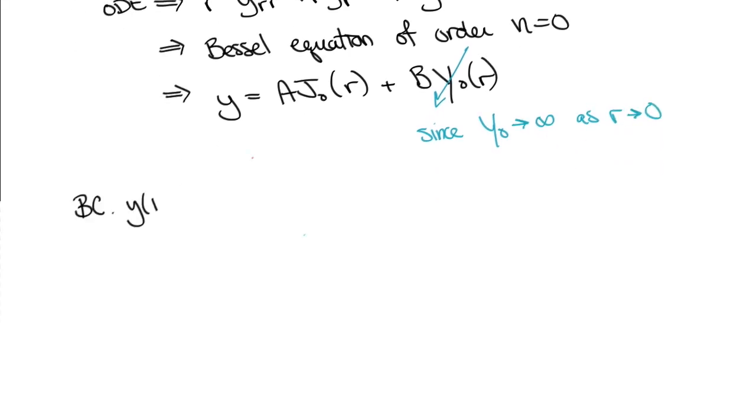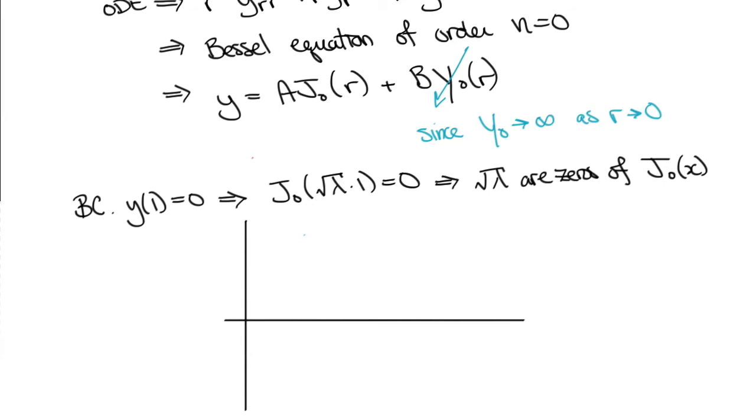The other boundary condition x equal to 1, or r equal to 1 over beta, forces us to set j0 of 1 over beta, or j0 of the square root of lambda equal to 0. So that we see that in order for there to be a non-trivial solution, then the square root of lambda must be equal to one of the infinitely many zeros of the Bessel function. These zeros we write as alpha 0 1, alpha 0 2, alpha 0 3, and so on.